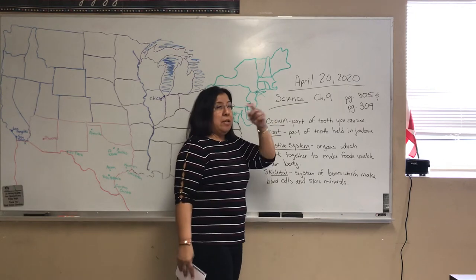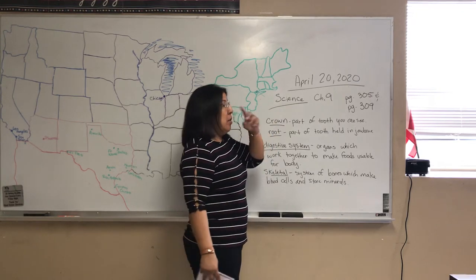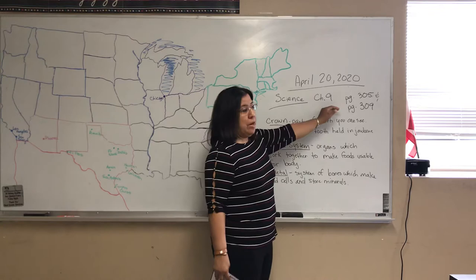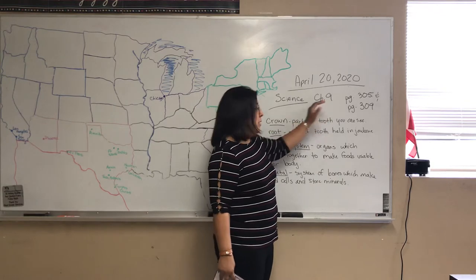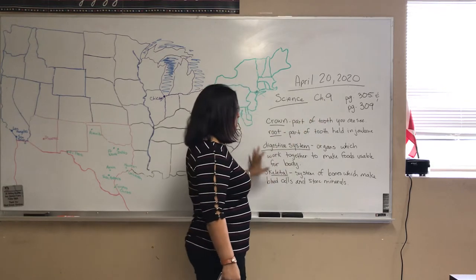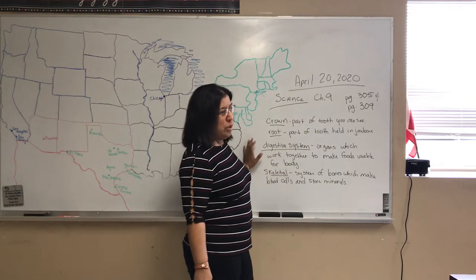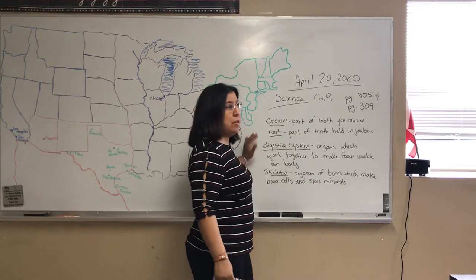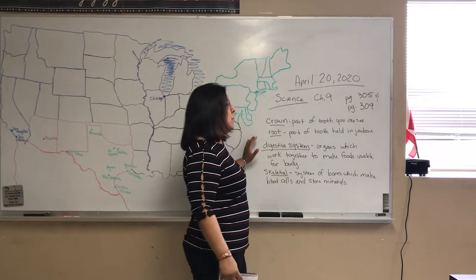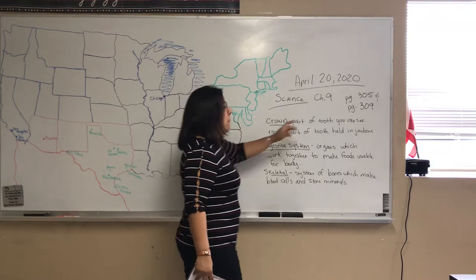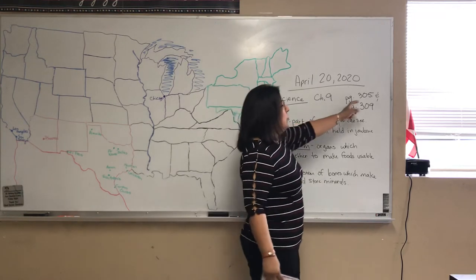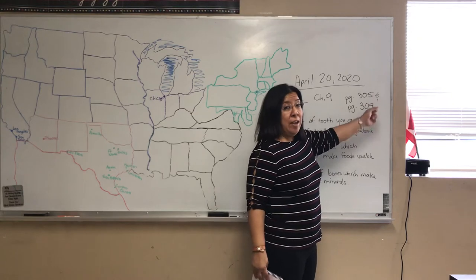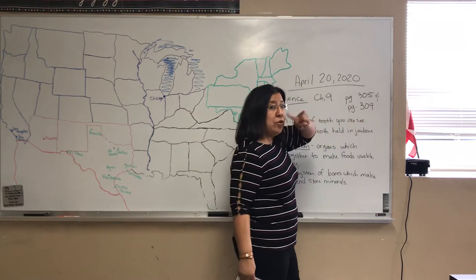For science, we're going to cover the last part of the chapter — we're still on chapter 9. These are the last few words. There's a few more that we've kind of already discussed, but I don't think these we've discussed too much. Make sure you learn the diagram on page 305 and 309. There's two.